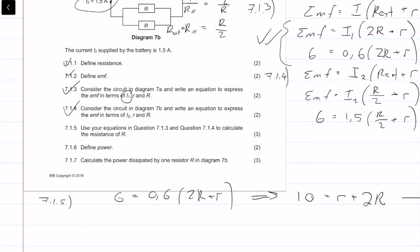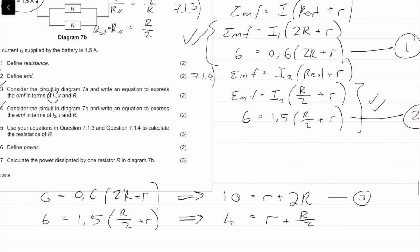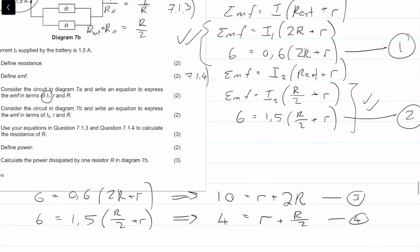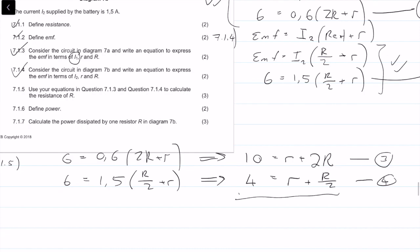Then the next one we're looking at is 6 equals 1.5 times (r over 2 plus r). Solving for that, divide both sides by 1.5, we get 4 equals r plus r over 2, and that's equation 4. Then I'm going to do a simultaneous solution and take 3 minus 4.